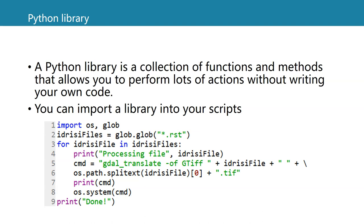In this example, you see OS, which is a library for using operating system functions. And glob is a library for searching for string patterns.